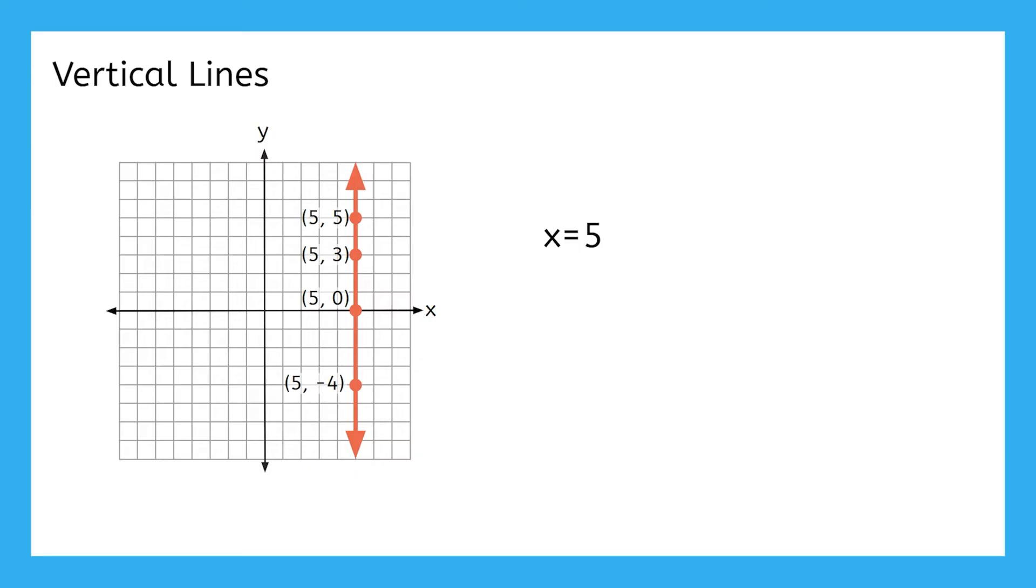So the equation of this line, where all of the points have an x-coordinate of 5, is just x equals 5.